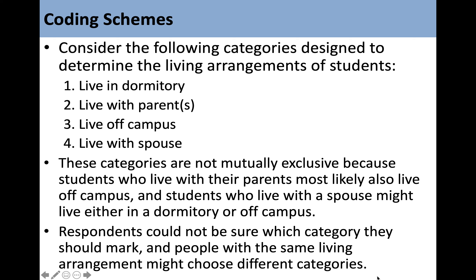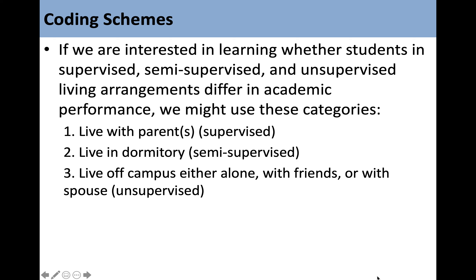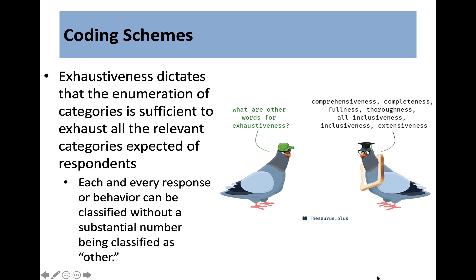If we are interested in learning whether students in supervised, semi-supervised, and unsupervised living arrangements differ in academic performance, we might use these categories: live with parents (supervised), live in dormitory (semi-supervised), and live off campus — either alone, with friends, or with a spouse (unsupervised). Exhaustive dictates that the enumeration of categories is sufficient to exhaust all relevant categories expected of respondents, so each and every response can be classified without a substantial number being classified as 'other.'